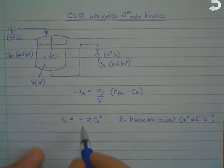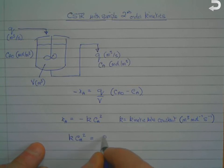We can substitute RA into this top equation, and we've got minus RA so this minus goes and that just leaves us with K times CA squared equals Q over V times CA naught minus CA.